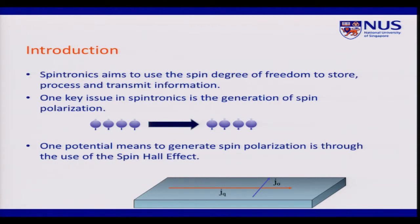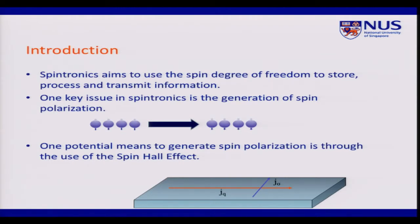There are many mechanisms to generate spin polarization, but one of the more traditional ones is to pass charge carriers through a ferromagnetic material. However, that is not very good from an applications point of view, because it is hard to include ferromagnets into conventional CMOS technology. Another approach is to make use of the spin Hall effect, which Dr. Tan mentioned earlier. Basically, if you have a charge current flowing through a material with spin-orbit interactions, you will discover a spin current flowing perpendicular to the direction of the charge current. Dr. Tan mentioned unitary transformations and gauge theory to explain this emergence of the spin current.